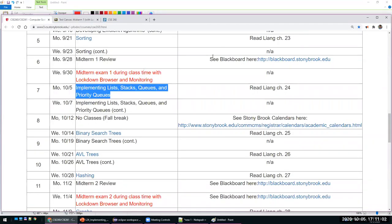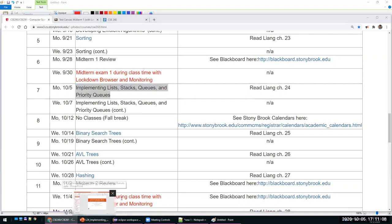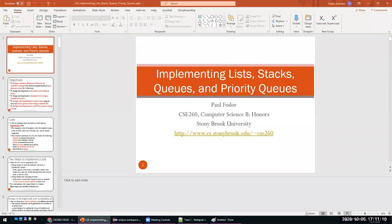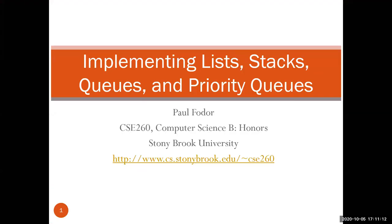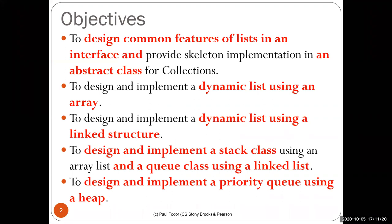Hi everyone, so today we'll talk about implementing lists, stacks, queues, and priority queues. The first thing we will do is extract all the common properties of array lists and linked lists into an interface and into an abstract class. Then, once we know the common features of these data structures as methods in an interface, we'll have skeleton implementations in abstract classes.